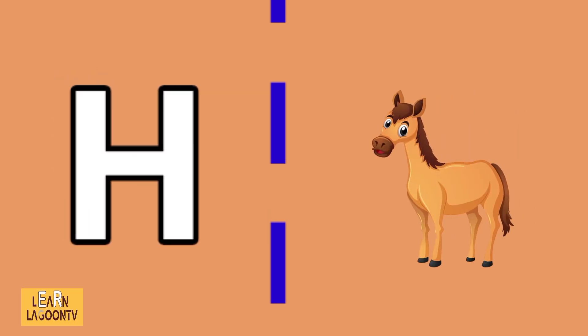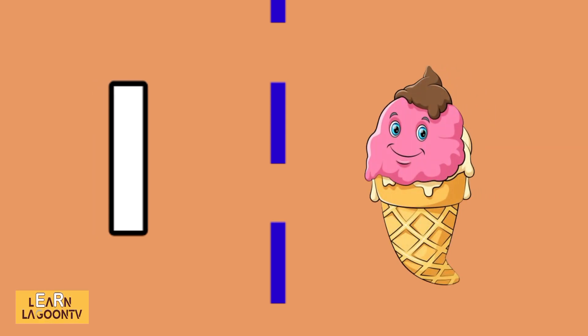H is for horse, I is for ice cream, J is for jug.